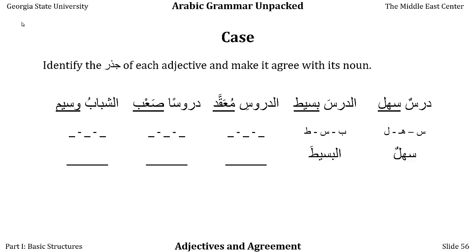If we say aldurus — the plural of dars, so 'the lessons' — because it's non-human plural, it is therefore feminine singular. We take the adjective mu'aqqad, which has a different wazn from the other adjectives. Aldurus is feminine singular (non-human plural rule), so we add ta' marbuta to mu'aqqad. Aldurus is definite (alif-lam), so we add alif-lam to the adjective. And it's in the majrur or genitive case (kasra), so we add kasra: aldurus almu'aqqadatu, the complicated lessons. The root is 'ayn-qaf-dal; the meem is a grammatical prefix.